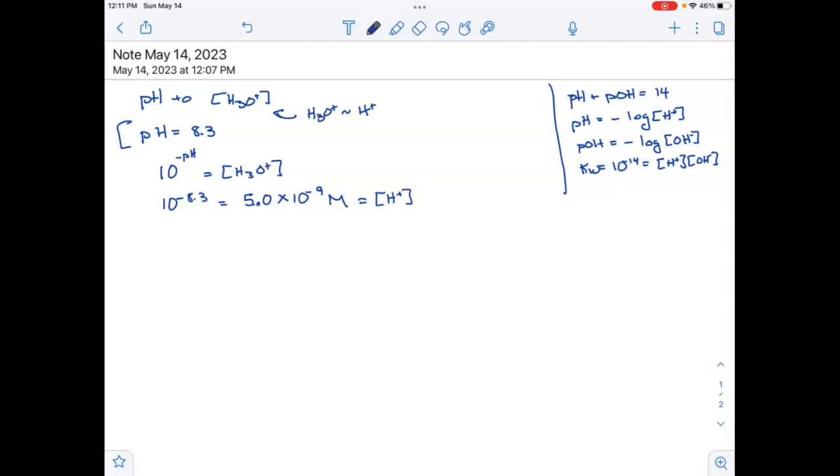Now if I wanted to get hydroxide concentration also, then what I can do is use the Kw, 10 to the minus 14 equals the H+ concentration times the OH- concentration. And if I take 10 to the minus 14 and divide by this number, which is my H+ concentration, I get the hydroxide concentration.